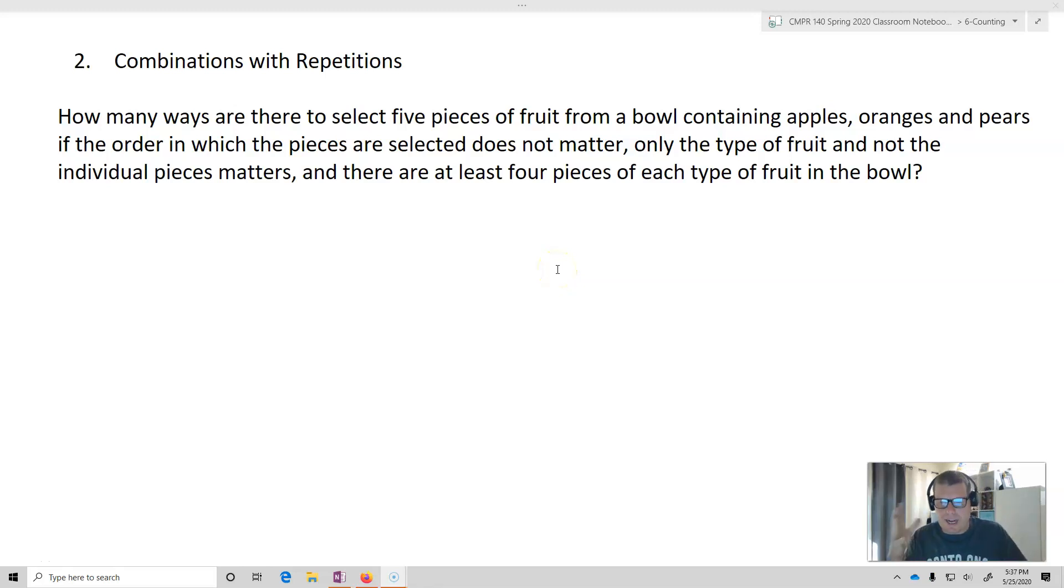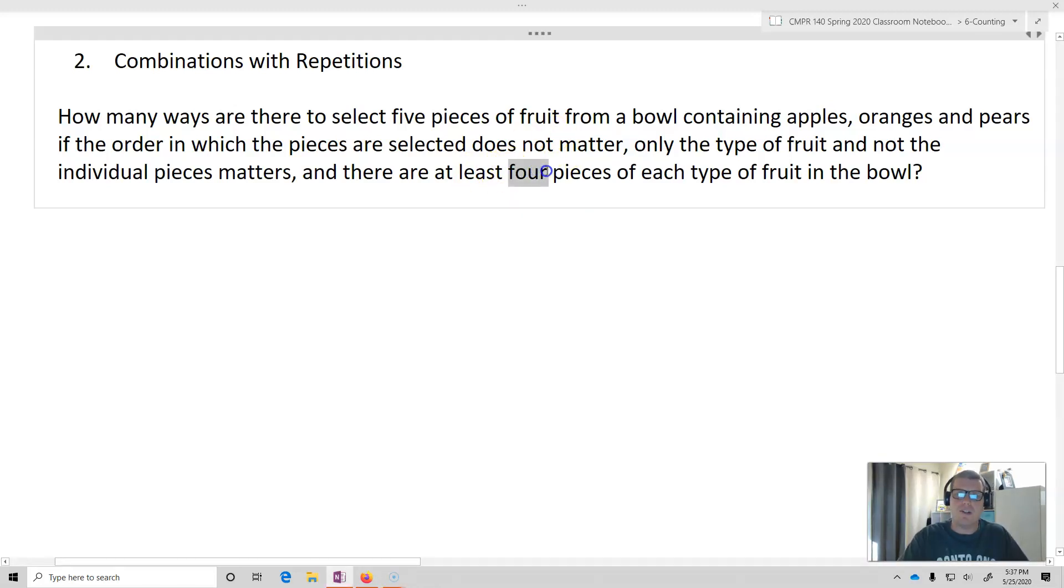So now let's take a look at a kind of problem where we're going to be doing some counting. This is working with combinations with repetitions. How many ways are there to select five pieces of fruit from a bowl containing apples, oranges, and pears if the order in which the pieces are selected does not matter, only the type of fruit and not the individual piece matters, and there are at least five pieces of each type of fruit in the bowl.